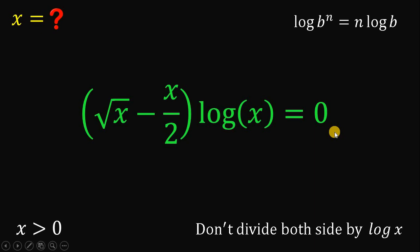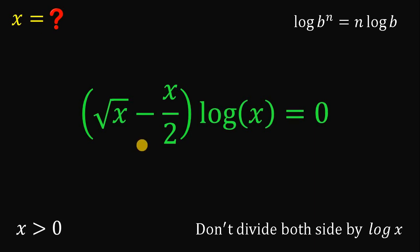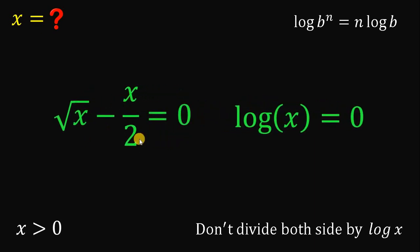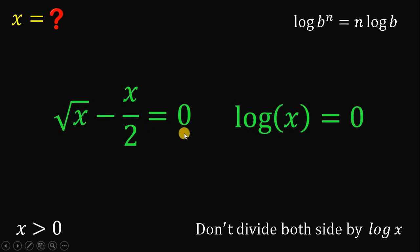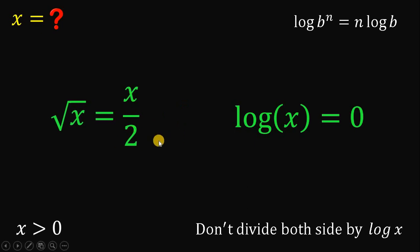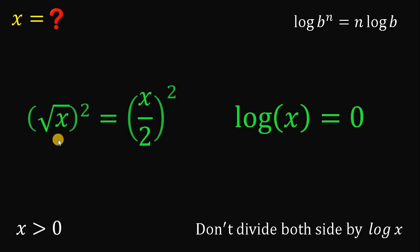This gives us: square root of x minus x over 2, multiplied by logarithm of x, equals 0. Since the product equals 0, at least one of them must equal 0. Therefore, either square root of x minus x over 2 equals 0, or logarithm of x equals 0. Let's solve for x using the first equation: square root of x minus x over 2 equals 0. Add x over 2 to both sides, then square both sides to cancel the square root.